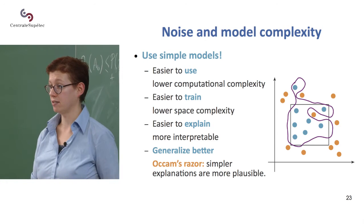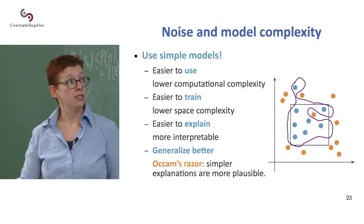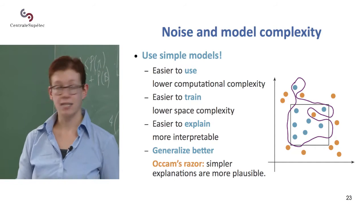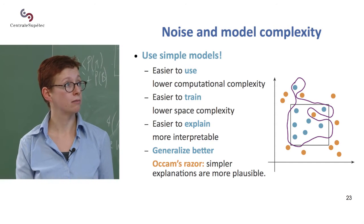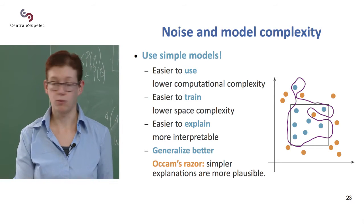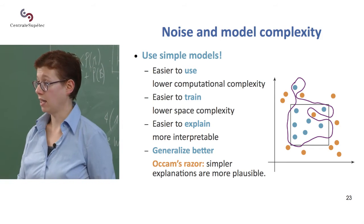The first one is that they are easier to use and to train and to explain. That was already a lot of reasons. But it's much easier to encode this rectangle and to use this rectangle to separate, to know whether a point is inside or outside, than to draw this line, which I did poorly, and to then have the computer decide whether a point is inside or outside that line.